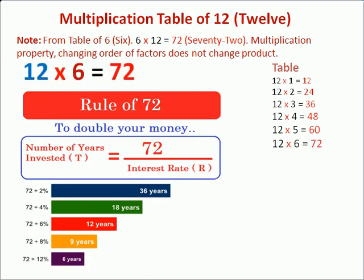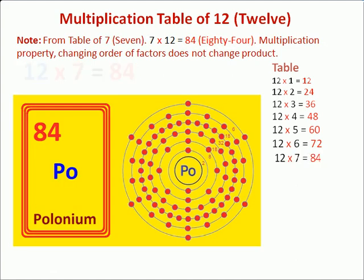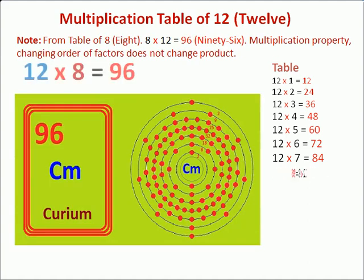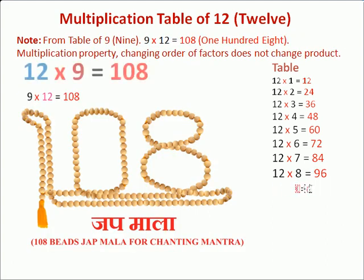Twelve sixes are seventy-two. Twelve sevens are eighty-four. Twelve eights are ninety-six. Twelve nines are one hundred and eight.